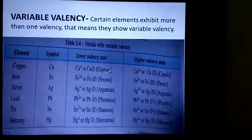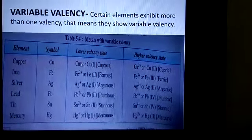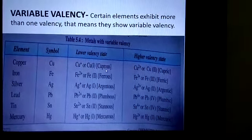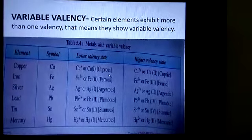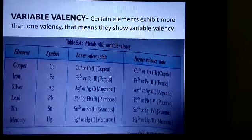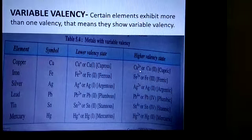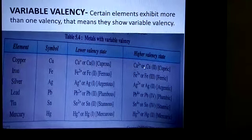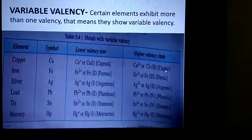You can see in the table. The lower valency state, that is +1, when copper shows +1 valency, the suffix 'ous' is being added. In the word, that is cuprous. And when it shows +2 valency, means higher valency, then 'ic' suffix is added. That is cupric.